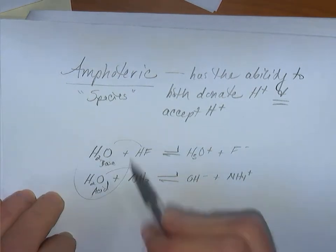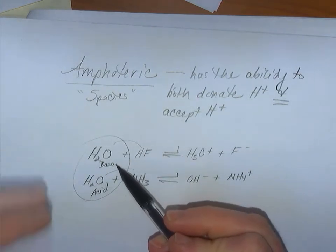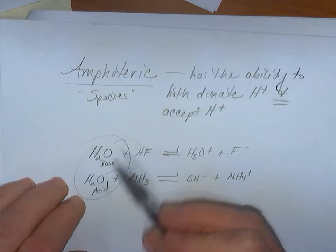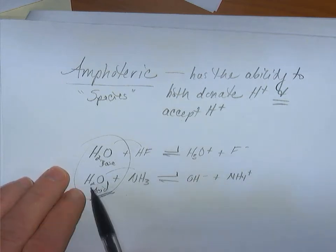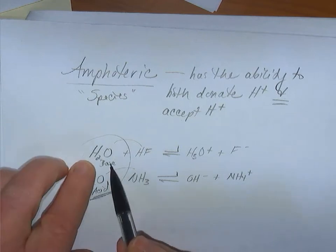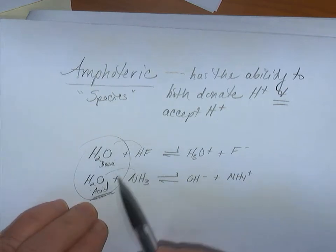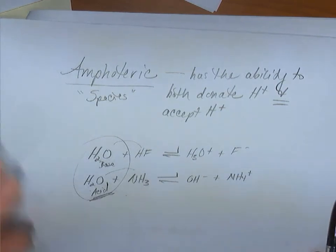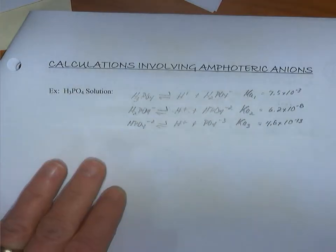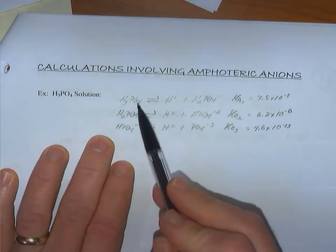We can often diagnose whether something is amphoteric based upon its formula. To act as an acid it needs to contain a hydrogen ion it can release, and to act as a base there needs to be some attraction for a hydrogen ion. Let's go back to highlighting polyprotic acids.